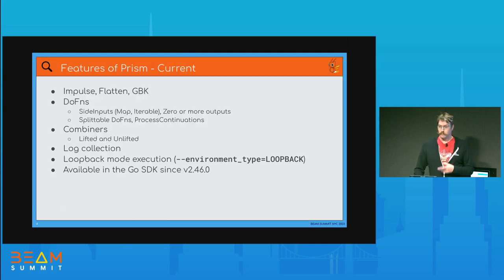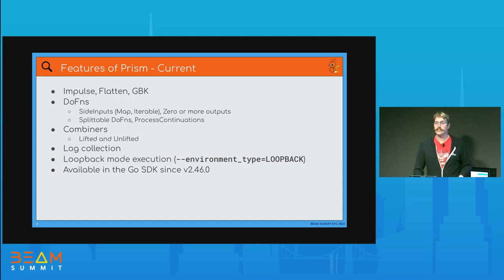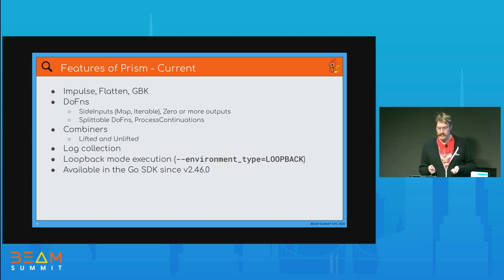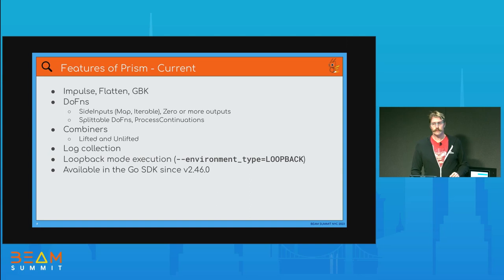In terms of features right now, it can do pretty much most of the basics: impulse, flatten, group-by-key, co-group-by-key if your SDK supports it. It can do side inputs — both map and iterable side inputs with your DoFns — handle DoFns with zero or more outputs, splittable DoFns, process continuations for doing basic streaming things locally, and it supports both lifted and unlifted combiners, although the default is lifted because those are more complicated. It collects logs. Execution is currently fully in loopback mode, because adding container execution is a bit trickier and I haven't had time. It also has full windowing support for all different kinds of windows — global window, iterable ones, and session windows — though not merging windows, as custom window fns aren't implemented in the Go SDK yet.